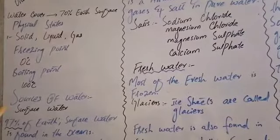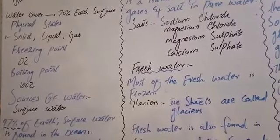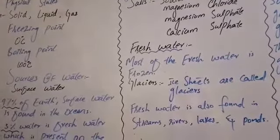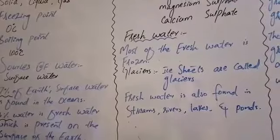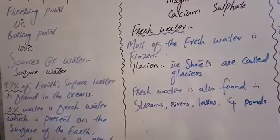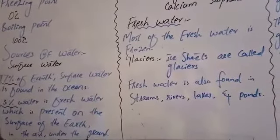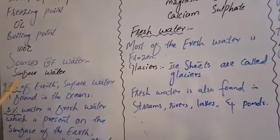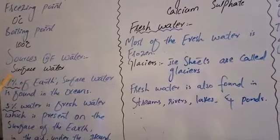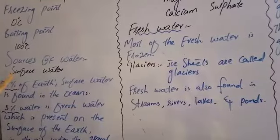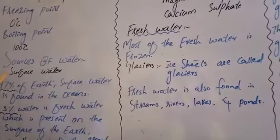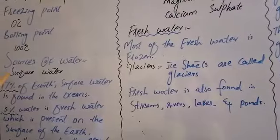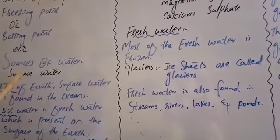All living things need water to survive. Please open your book to page number 43 — all details are mentioned there. Water is the basic need of all living things. Plants, fishes, insects, birds, and other animals all need water to grow.